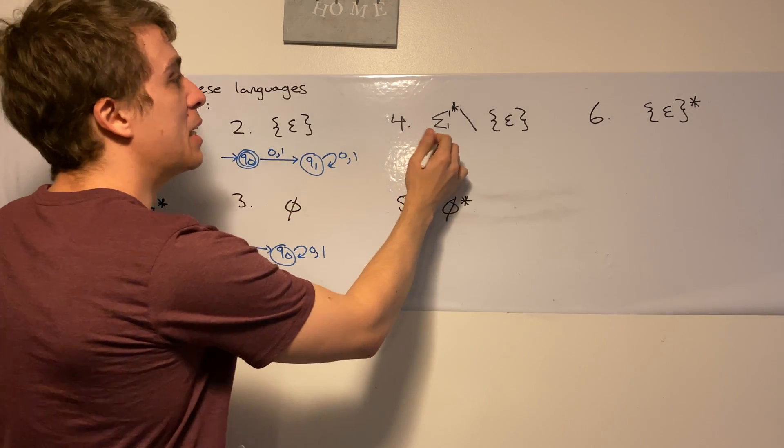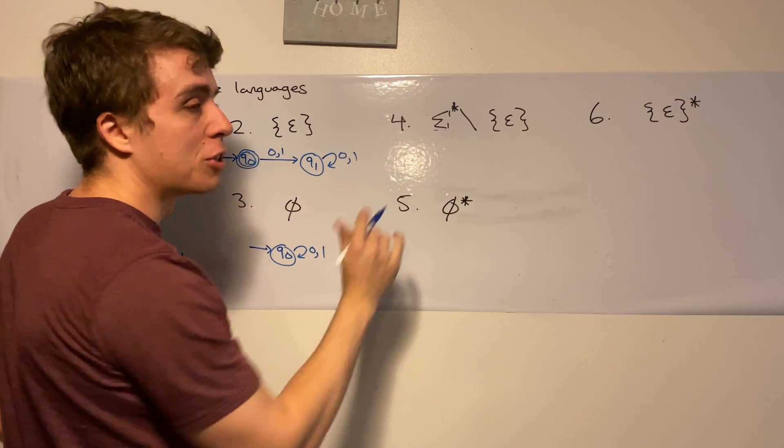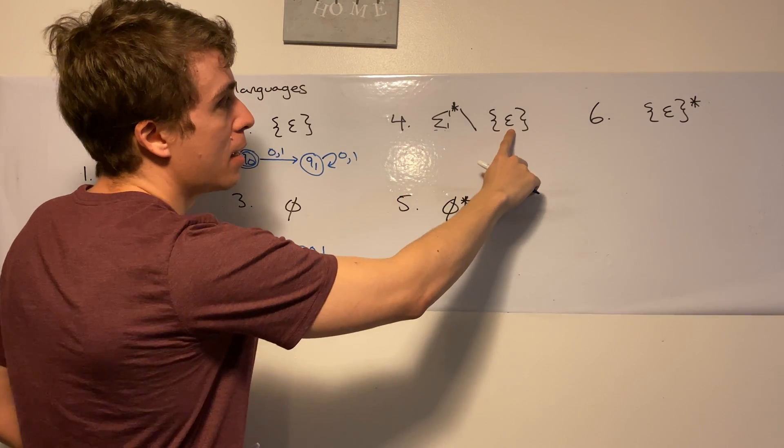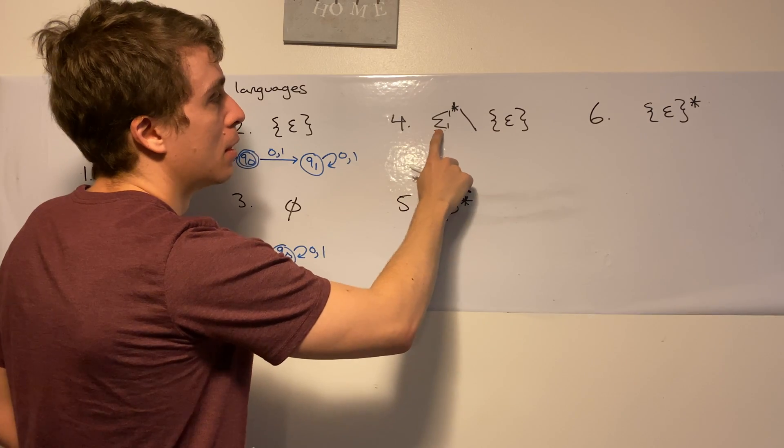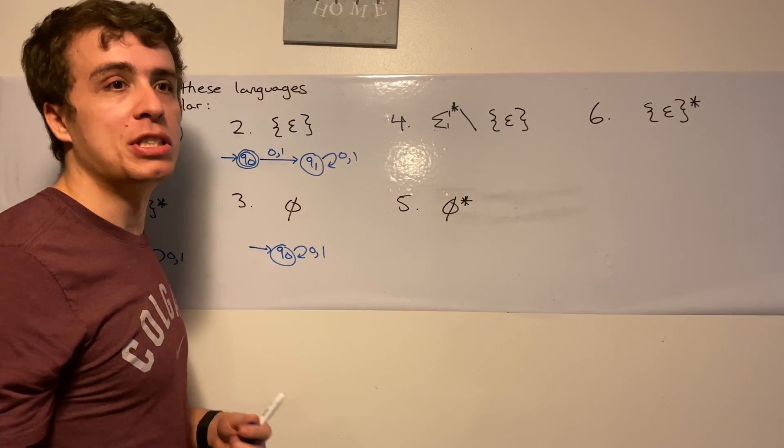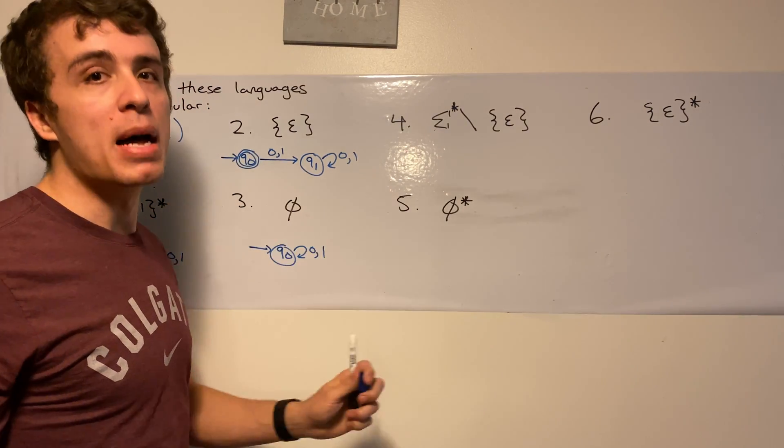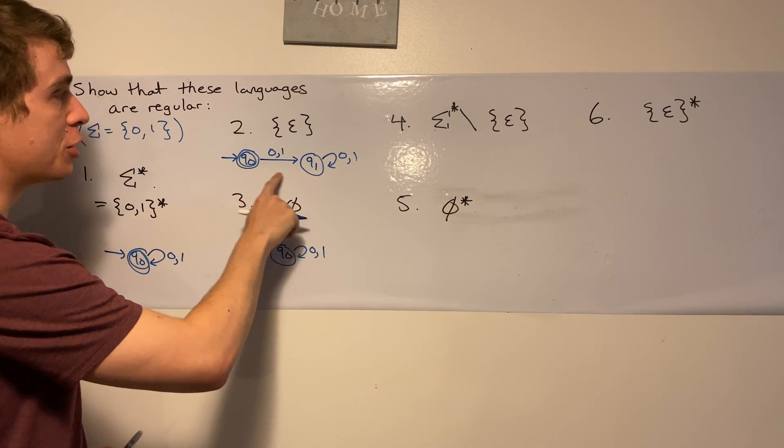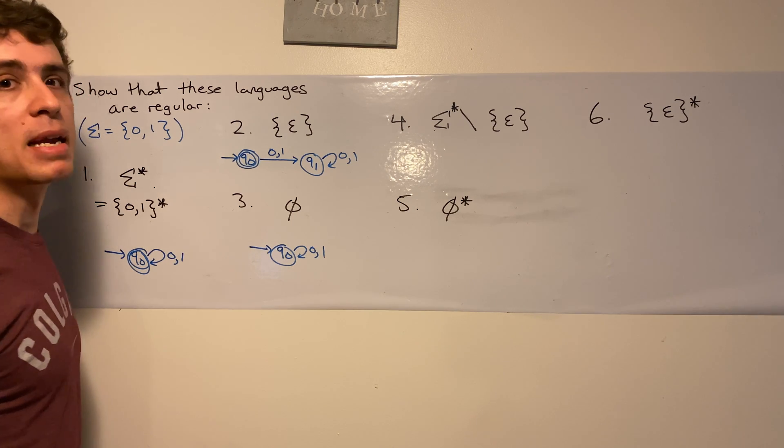So this says every string, so sigma star is every string, minus, so take away the empty string. So in English, this just says every string but the empty string, but we kind of solve the empty string problem here.